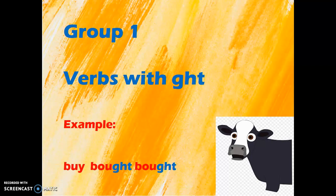For example, let's start with group number one, verbs with G-H-T. Verb: buy, bought and bought. As you can notice, these verbs in the past and past participle end with an ending G-H-T.